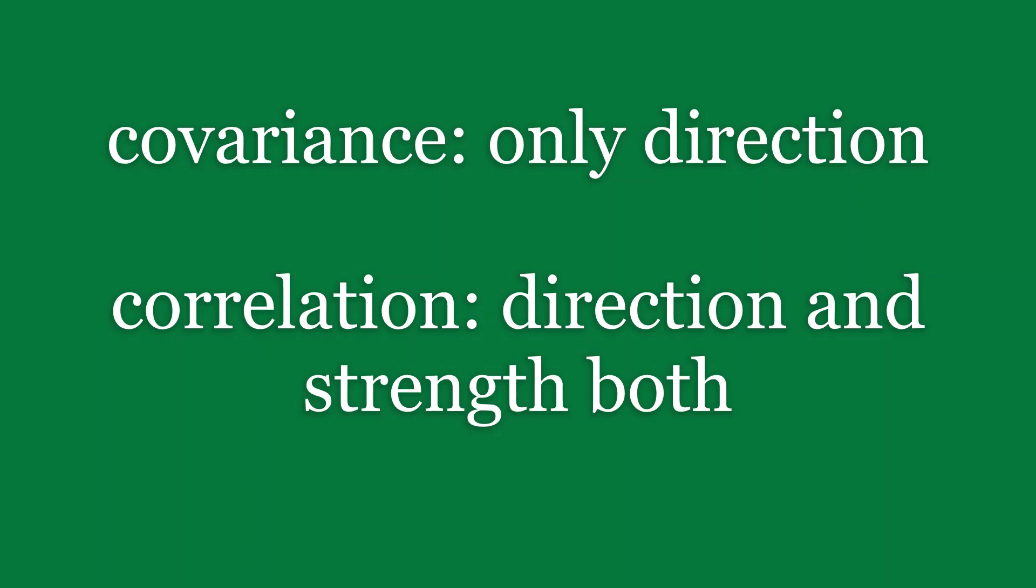Correlation is used to study the strength of a relationship between the two variables as well as direction. So the correlation shows you not only the kind of relationship in terms of direction but also how strong the relationship is. So we can say that correlation values have standardized notion, whereas covariance values are not standardized. And covariance cannot be used to compare how strong or weak the relationship because the magnitude has no direct significance.